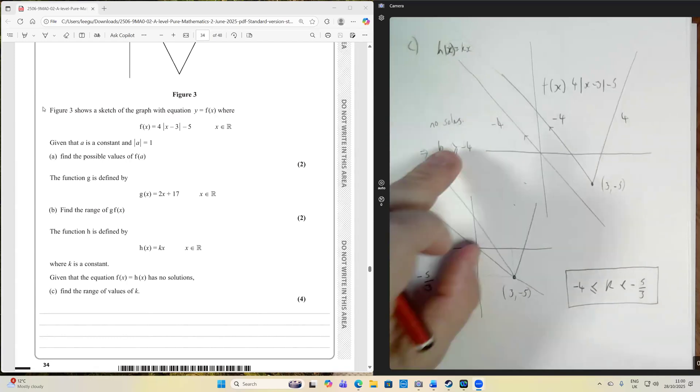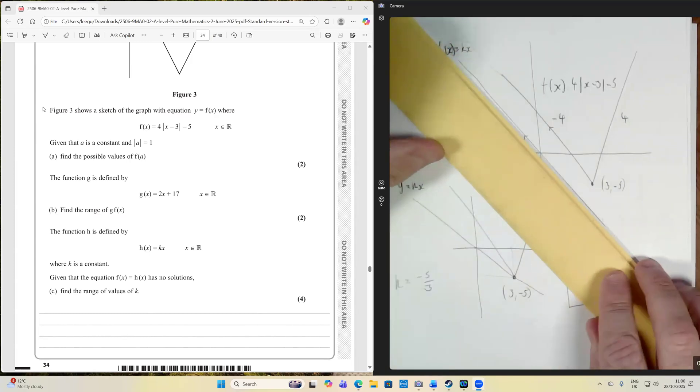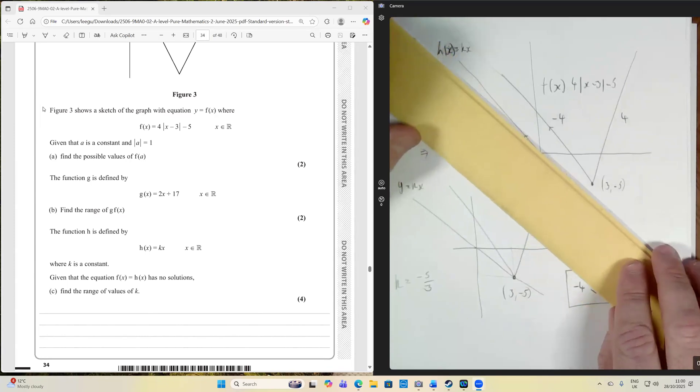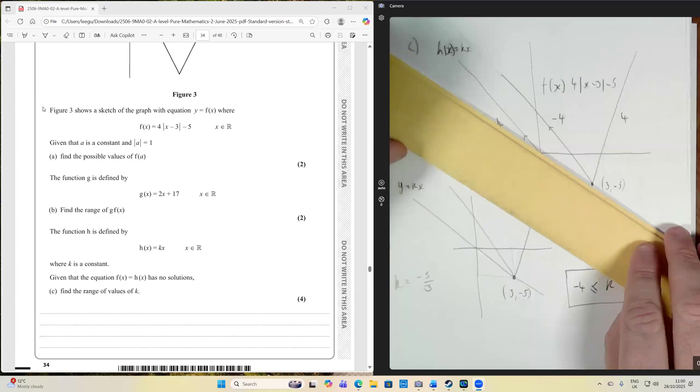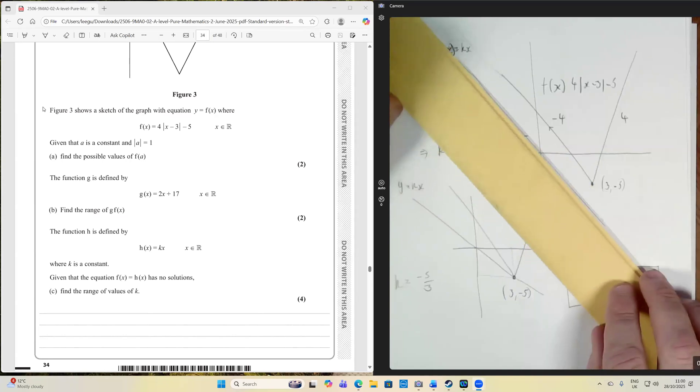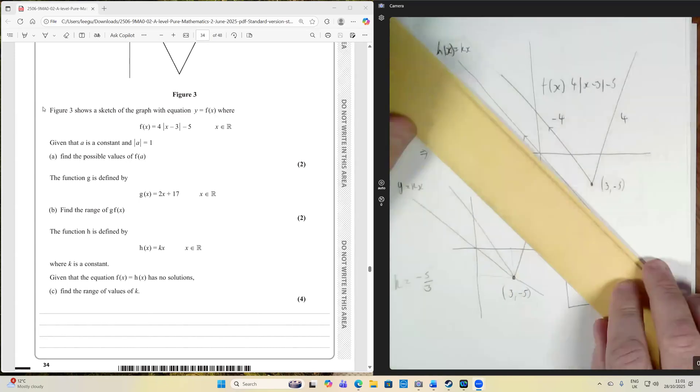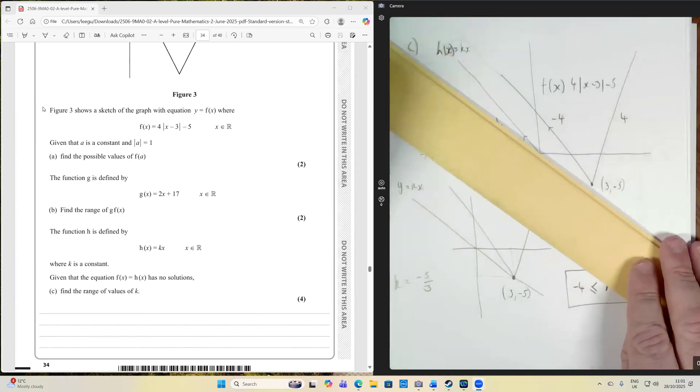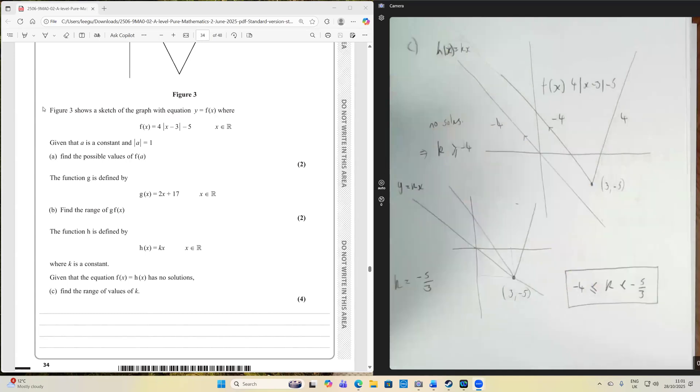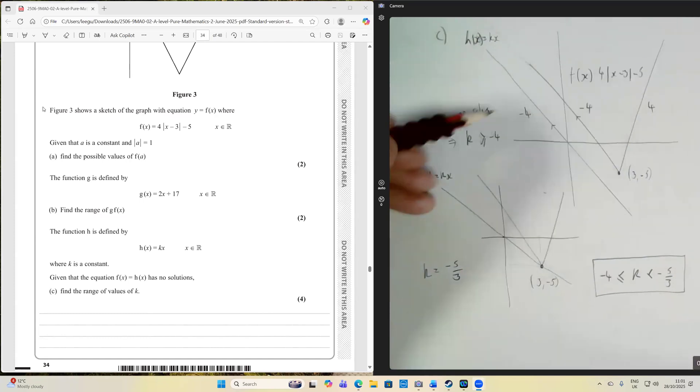Now, I got a bit confused about this. You can see I rubbed it out originally. But what happens now is, as the line h of x equals kx changes like this, still no solutions, still no solutions, still no solutions, stop. There's one solution when it gets to that point. Now, here's the confusing bit. As we've been doing that, the gradient has been increasing. No, it doesn't look like it. But when you've got a gradient of minus 4, let's imagine here we've got a gradient of minus 3.5. And let's say here we've got a gradient of minus 3. Well, minus 3 is bigger than minus 4. So there are no solutions when k is greater than or equal to minus 4.